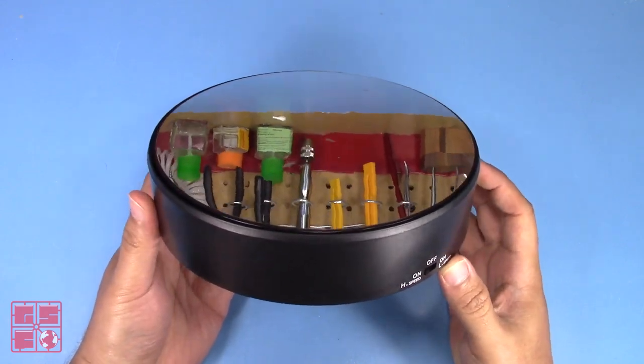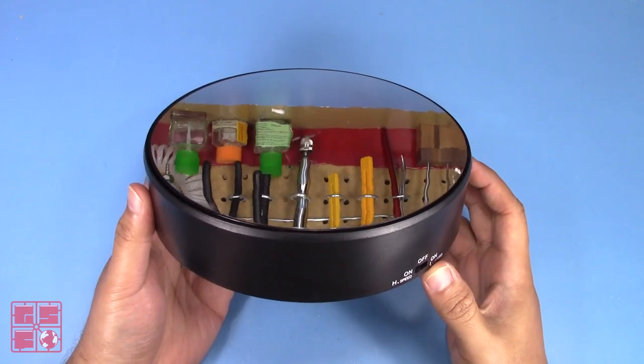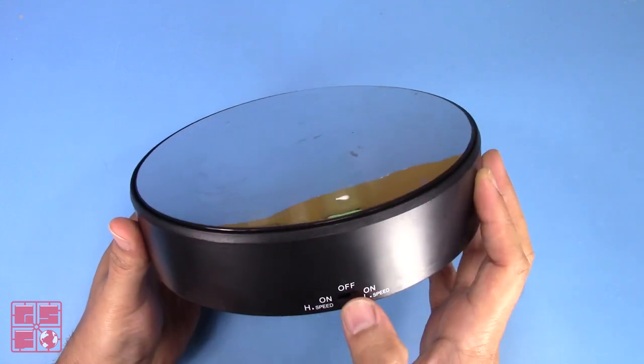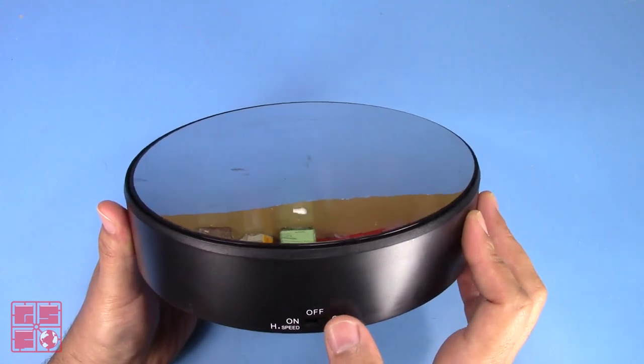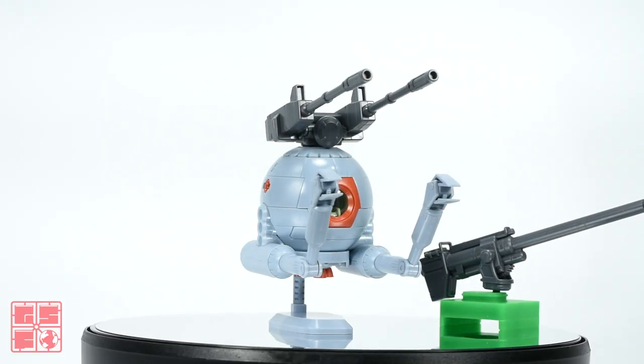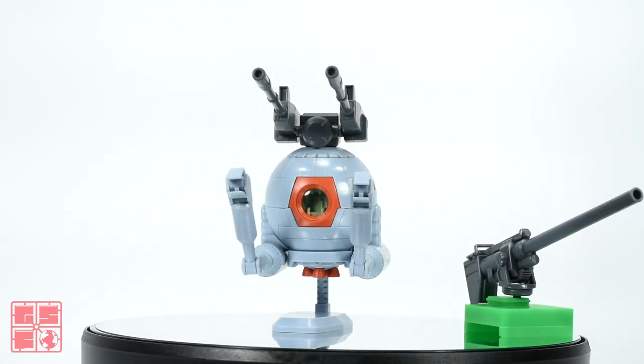So I thought, no big deal, I'll just replace the batteries and go on with life. But that didn't go as expected. With the new batteries, I quickly realized that the slow speed setting was a lot faster this time around. Too fast, in fact. It went from this, to this.